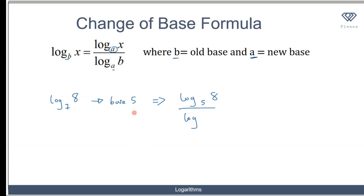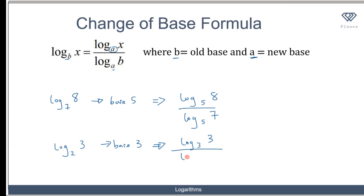Similarly, if I want to change log 3 in base 2 to base 3, this becomes the logarithm of 3 to base 3 over the logarithm of the old base 2 to the new base 3. We know that when the number and the base are equal the logarithm is 1, so log 3 to base 3 equals 1. This simplifies to 1 over log 2 to base 3.